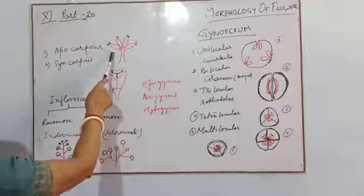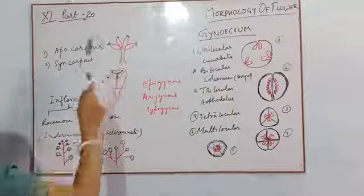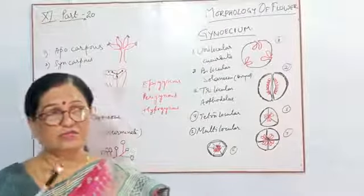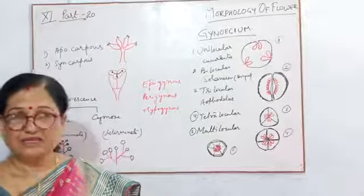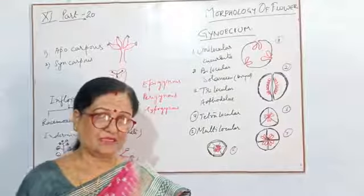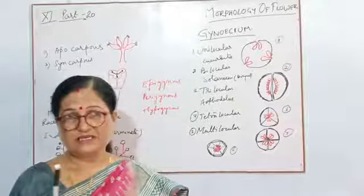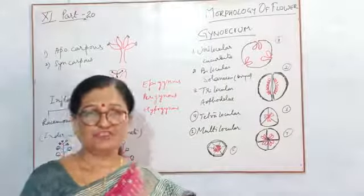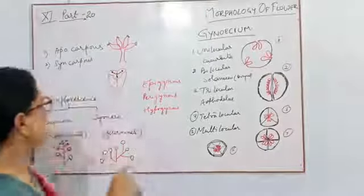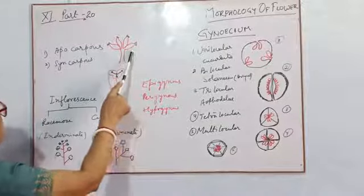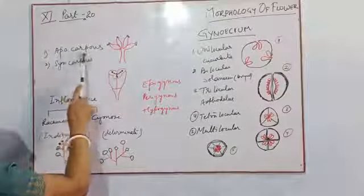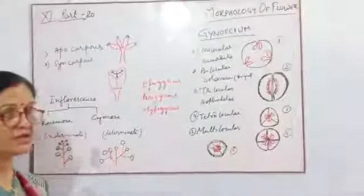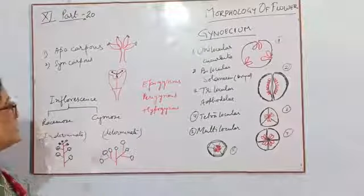Apocarpus means the carpels are free from each other. In the previous video I told you that when petals are free they are known as polypetalous, and when petals are joined they are known as gamopetalous. But in case of Gynoecium the name is different — if the carpels are free, then the ovary or Gynoecium is said to be apocarpus.